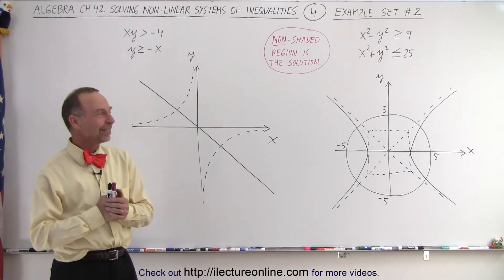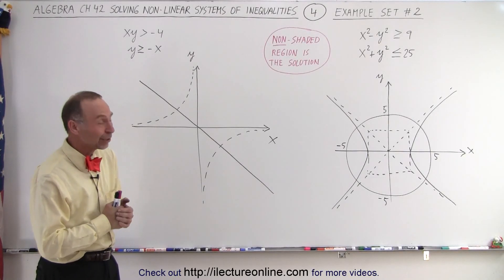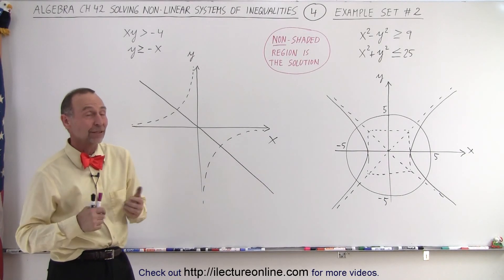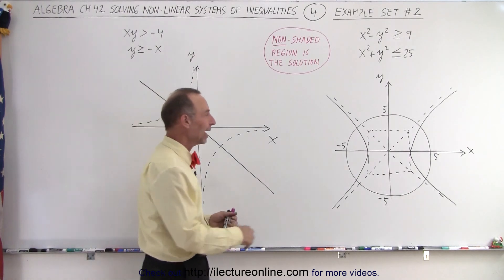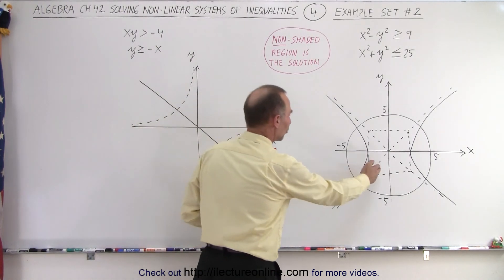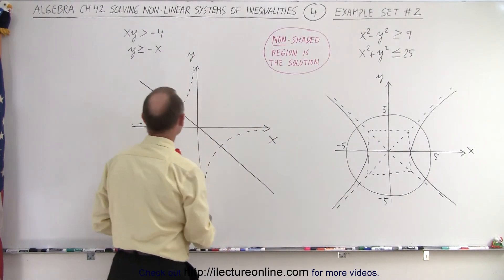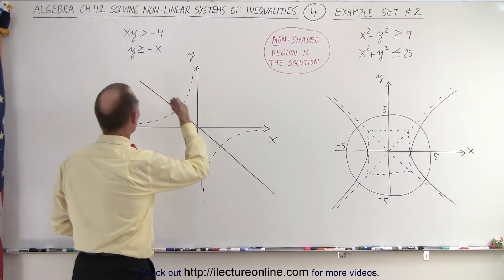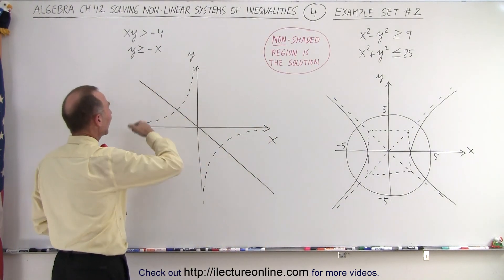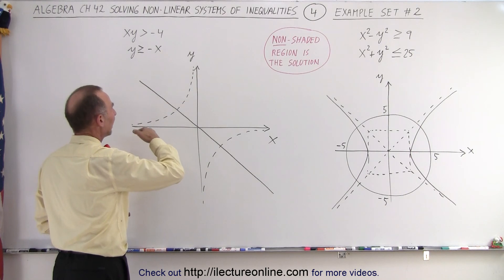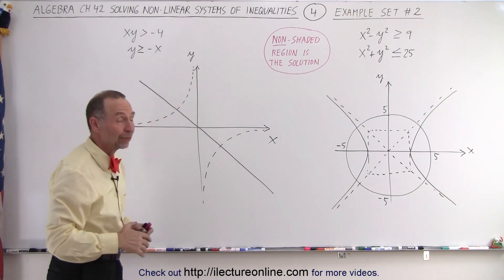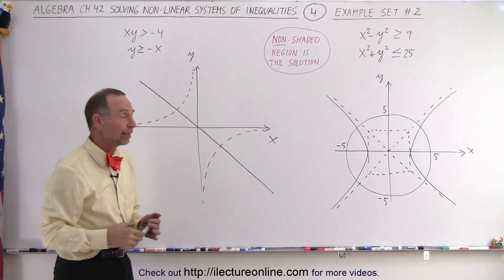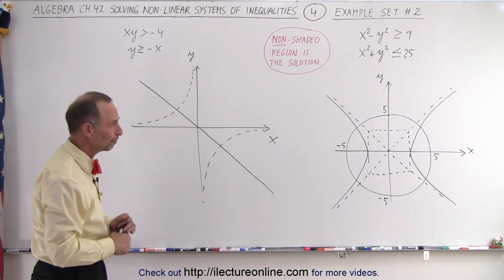Welcome to ElectronLine. Now let's take a look at these particular examples. Here we have a hyperbola and a circle, and here we have a y equals 1 over x function and a straight line — a y equals mx plus b type of equation.